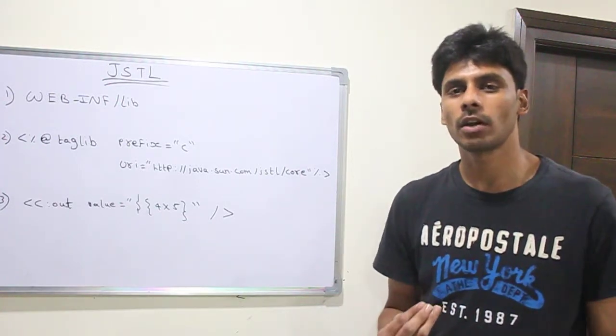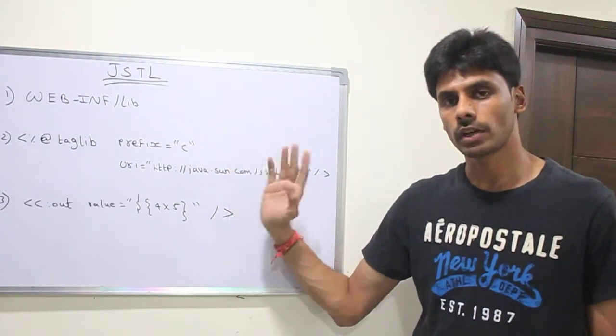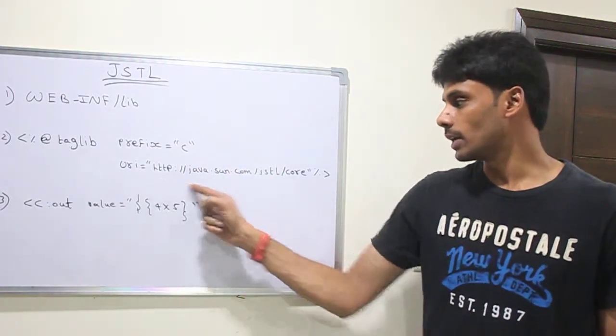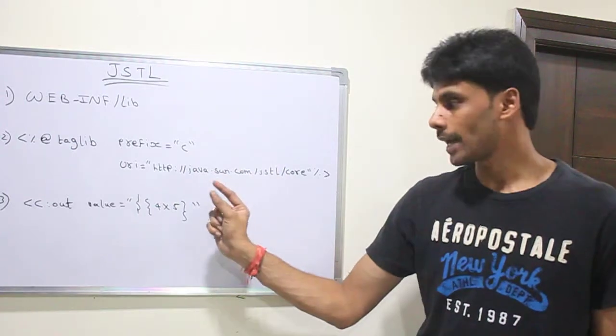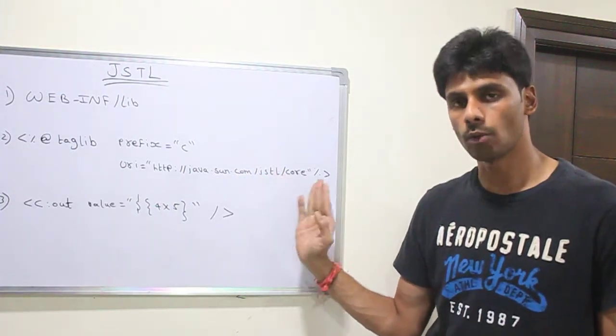But most of the times we as developers only use the core tags which are very famous out there. So URI uniquely identifies the core tags. For XML tags and SQL tags, it has a different URI.